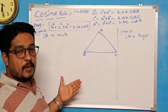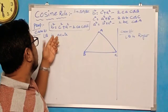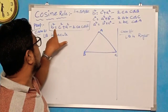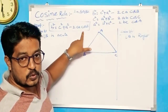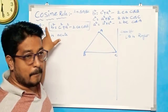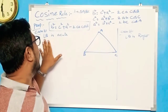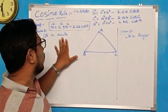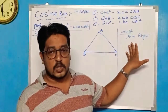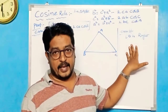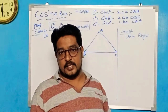Now this theorem I can prove in three cases. Case 1: I will prove B² = C² + A² − 2CA·cosB when angle B is acute. Case 2: angle B is a right angle. Case 3: angle B is obtuse.